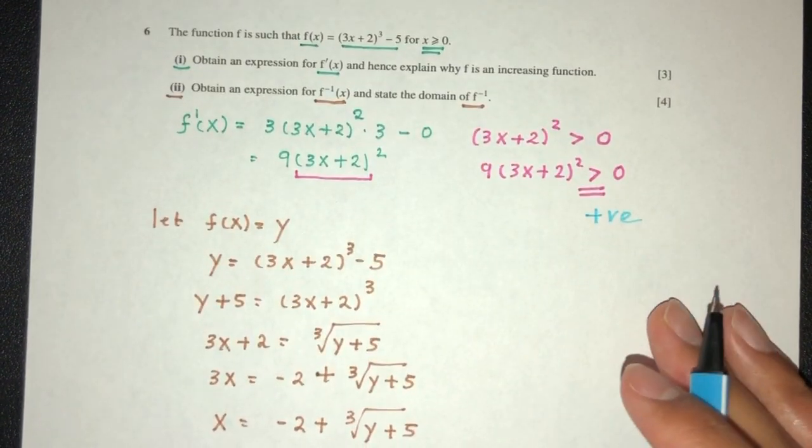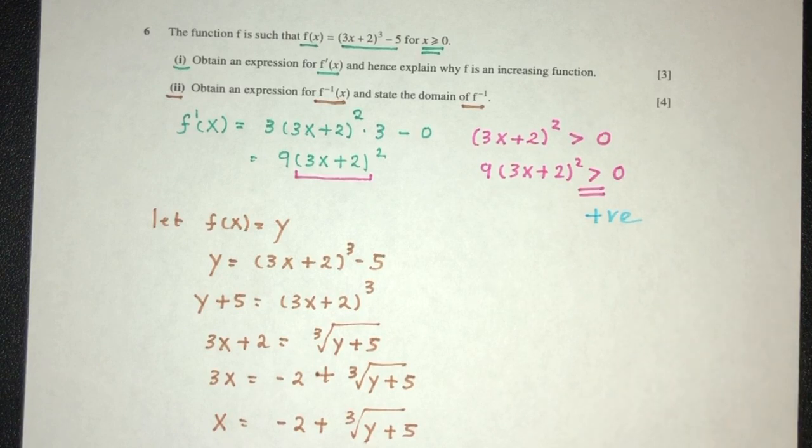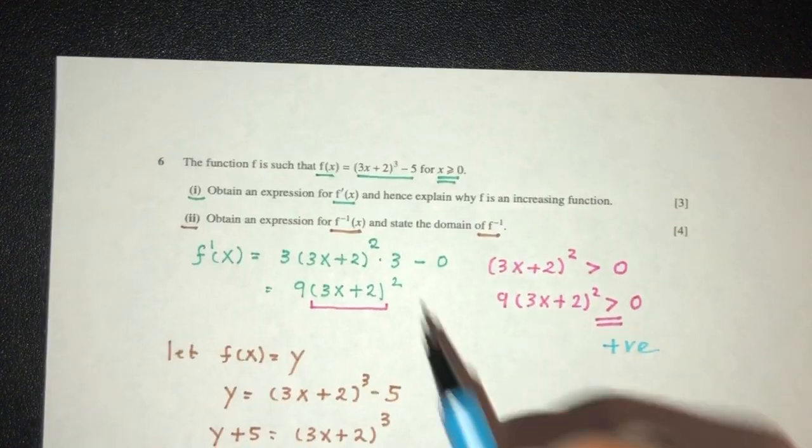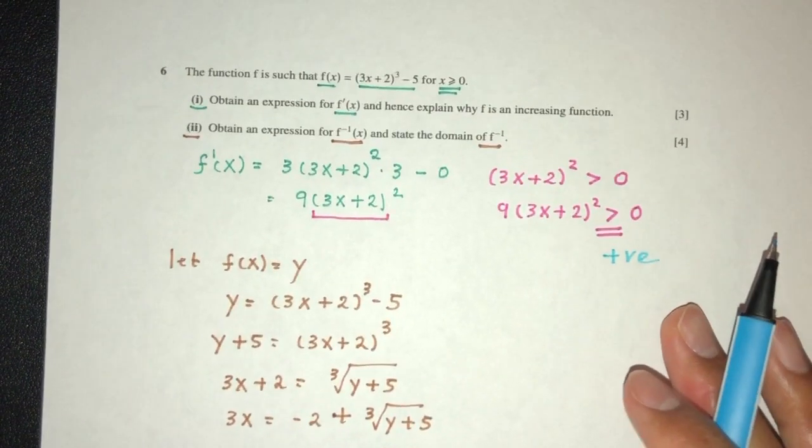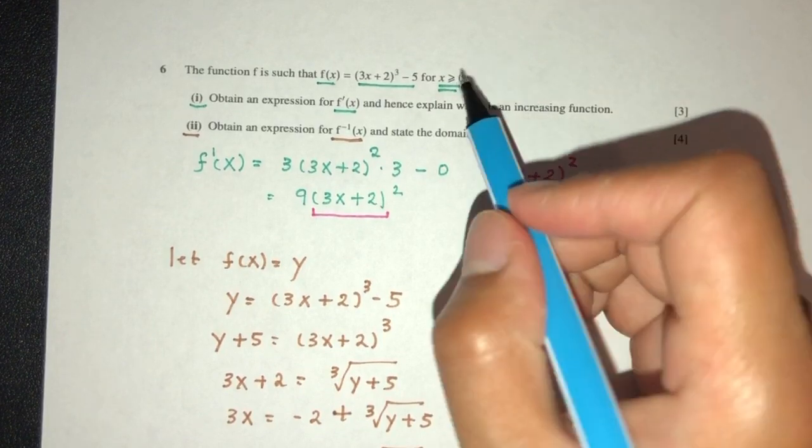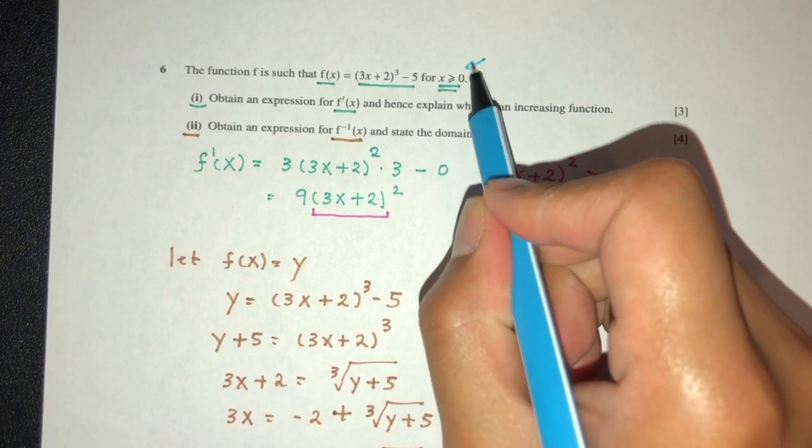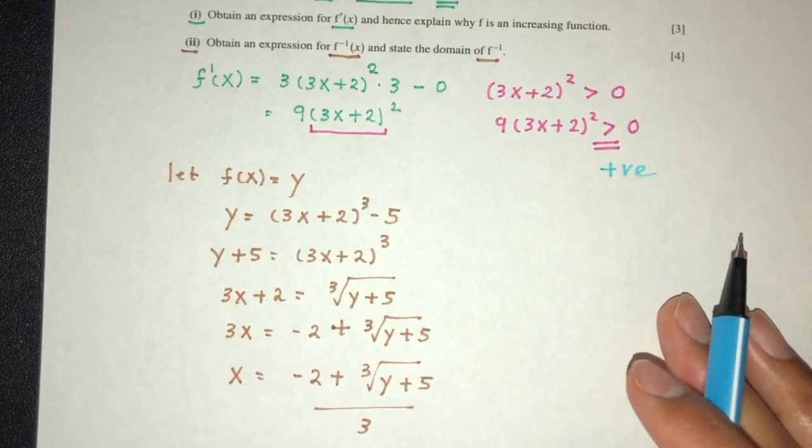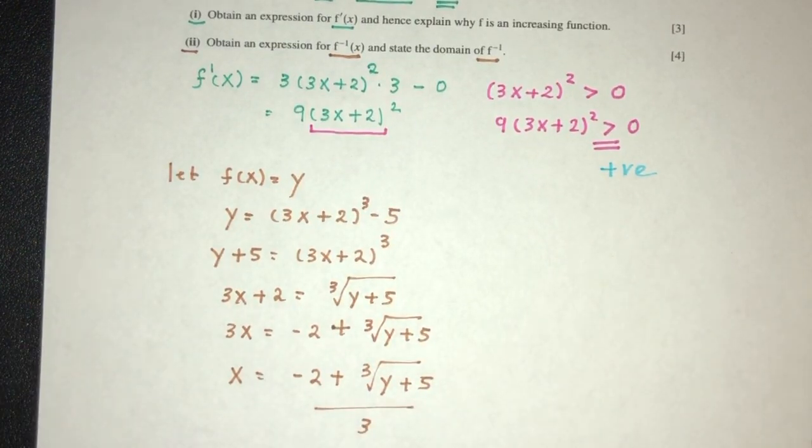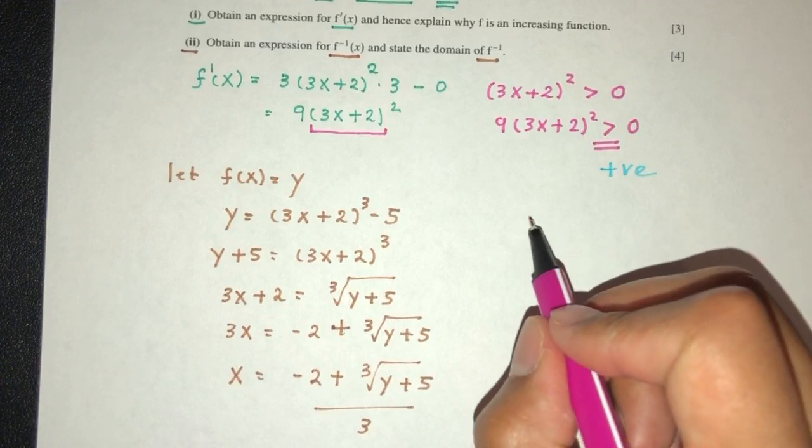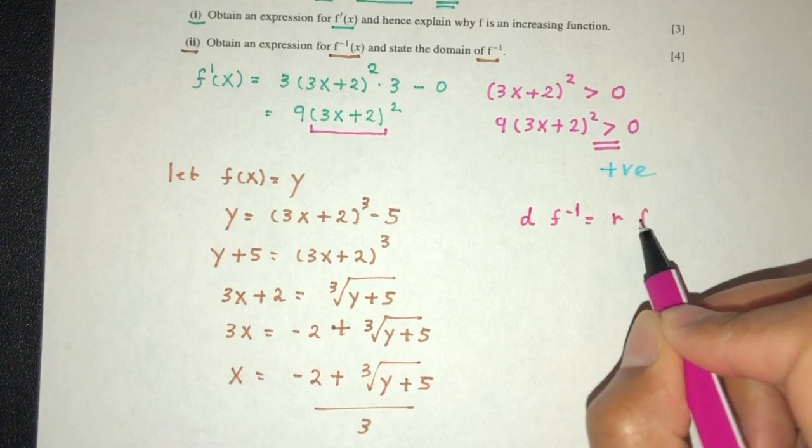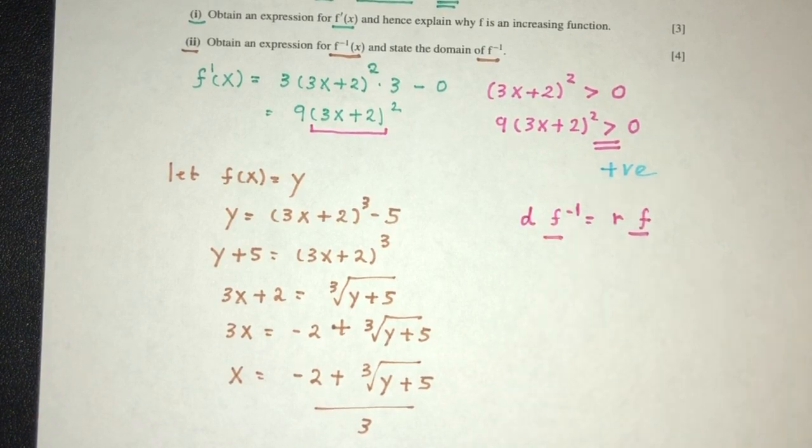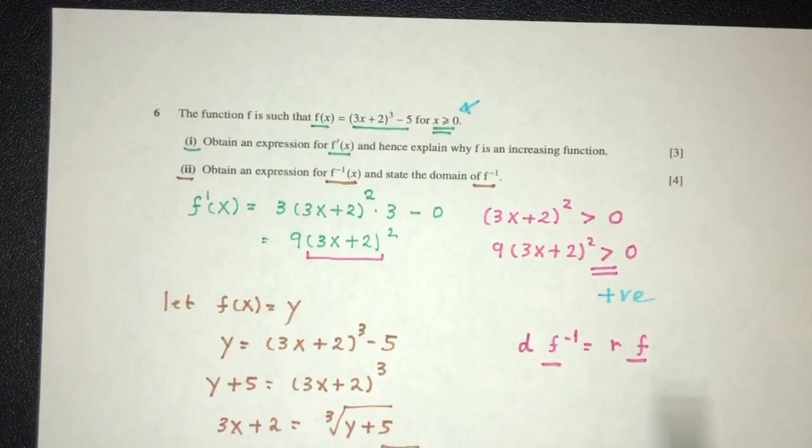So now we have to understand, we have to define the domain such that f inverse does exist. Now, this one is a cubic curve, as we can see right here. Domain was defined already as more than 0, which is a very good thing. Now, usually we find domain of f inverse as the range of f. So how can we find this?